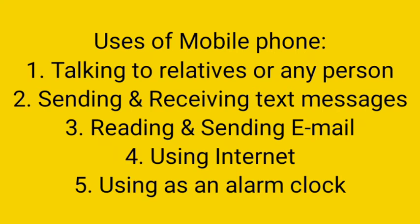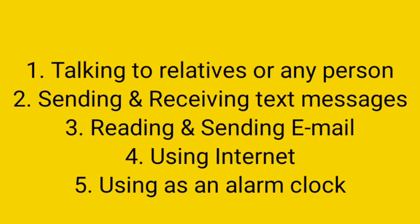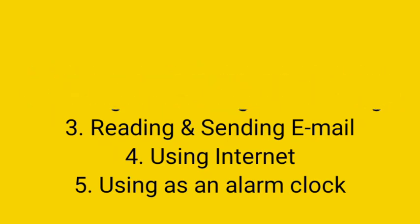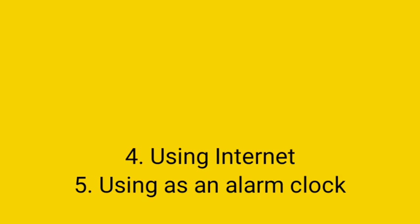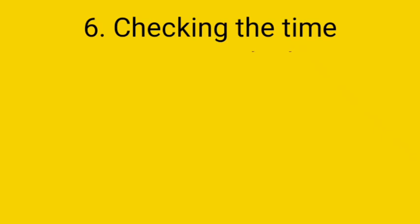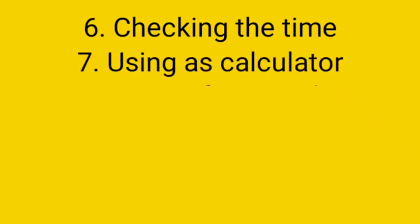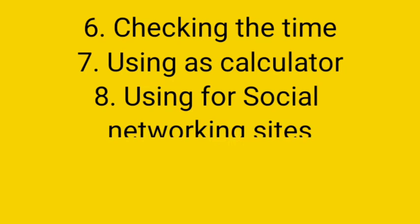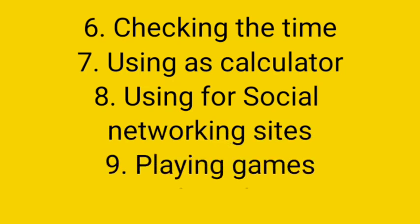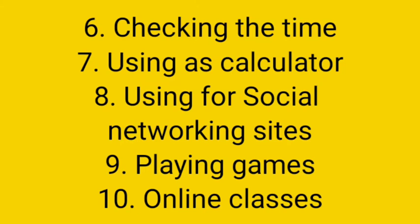Number 4, mobile phone is used for using the internet. Number 5, mobile phone is used as an alarm clock. Number 6, mobile phone is used for checking the time as a watch. Number 7, mobile phone is used as a calculator. Number 8, mobile phone is used for social networking sites like Facebook, WhatsApp, Instagram, YouTube, Twitter, etc.